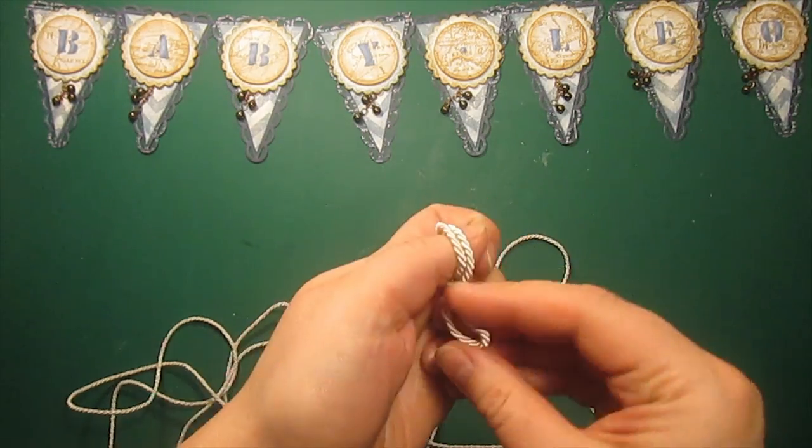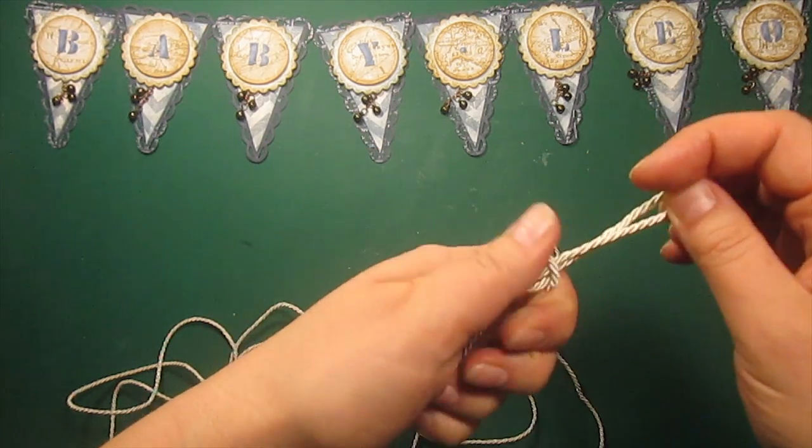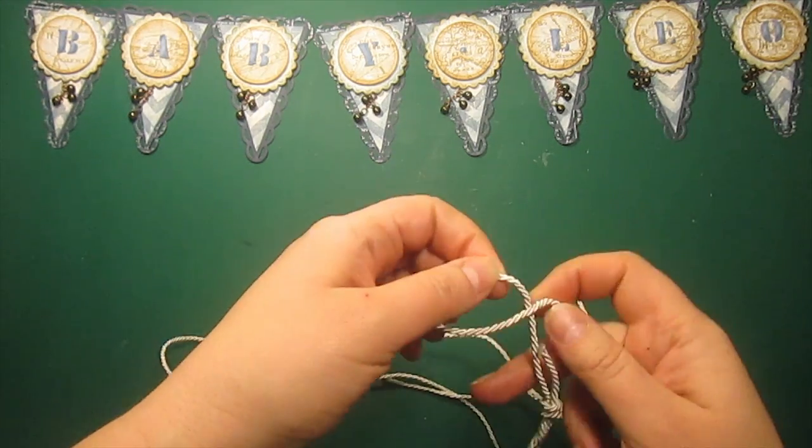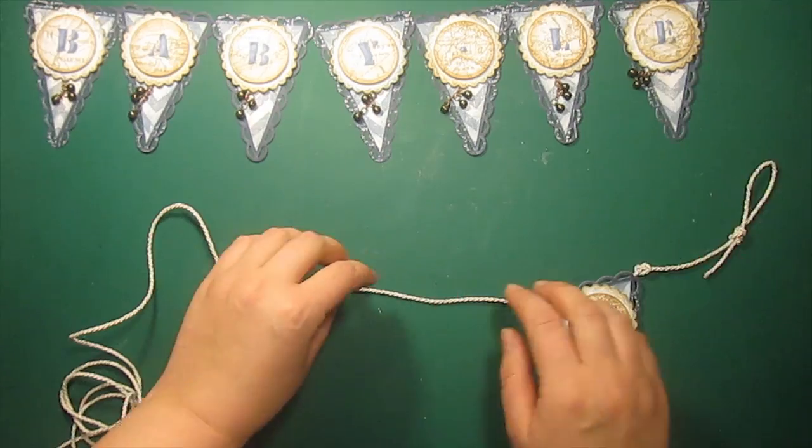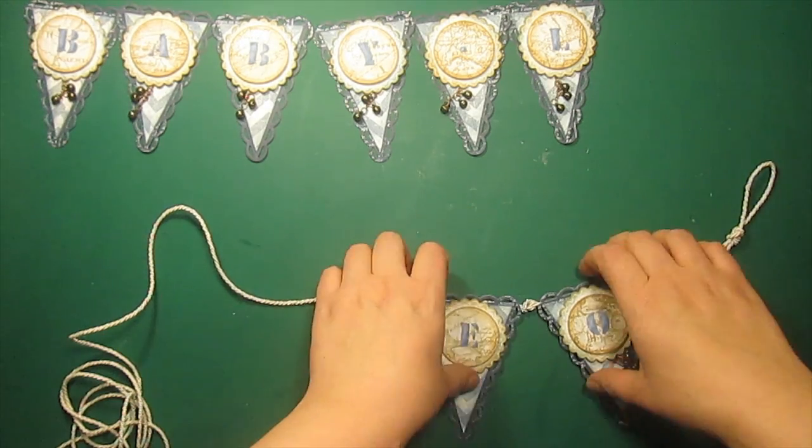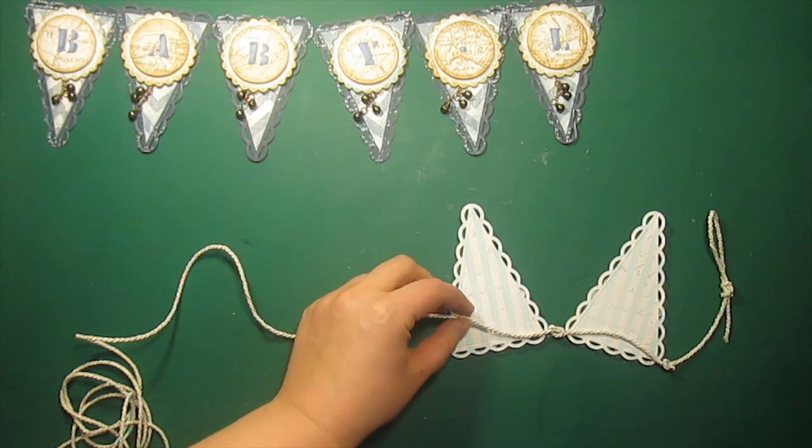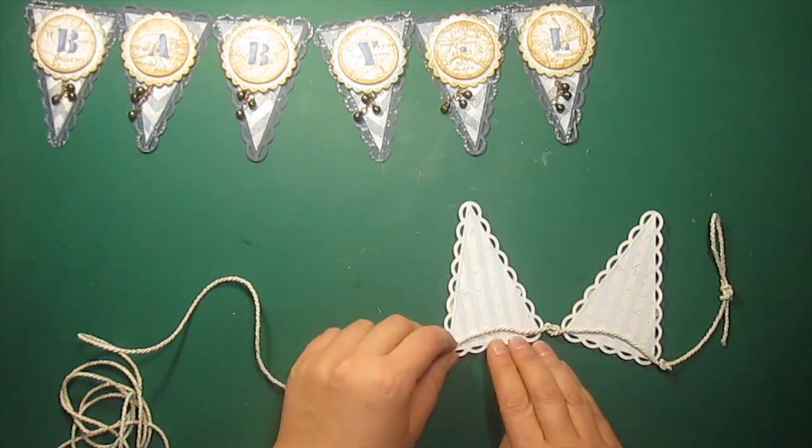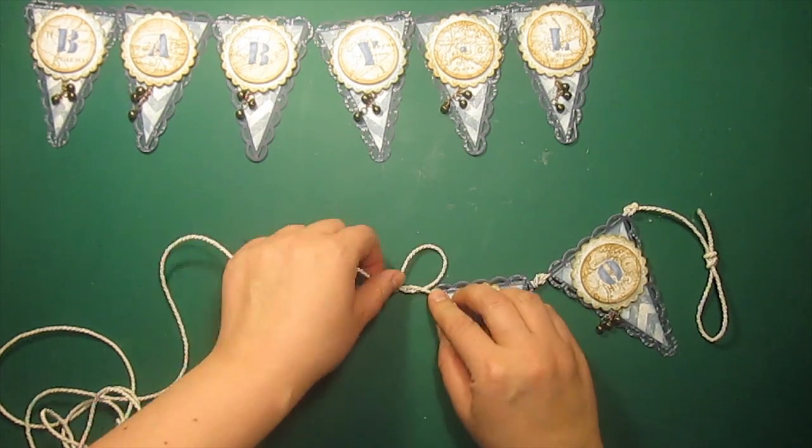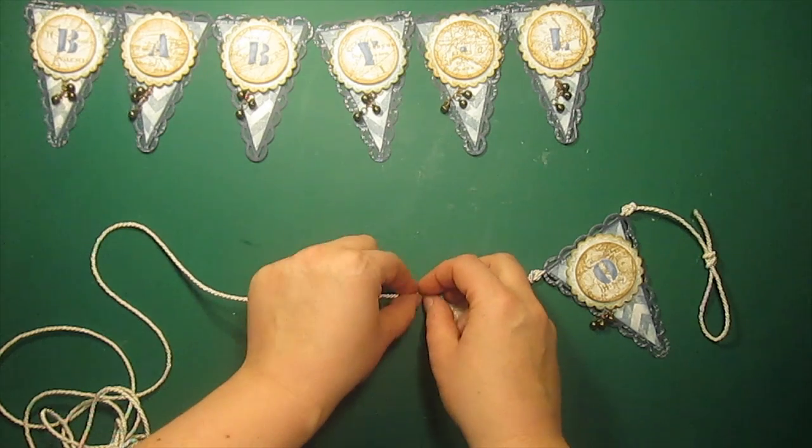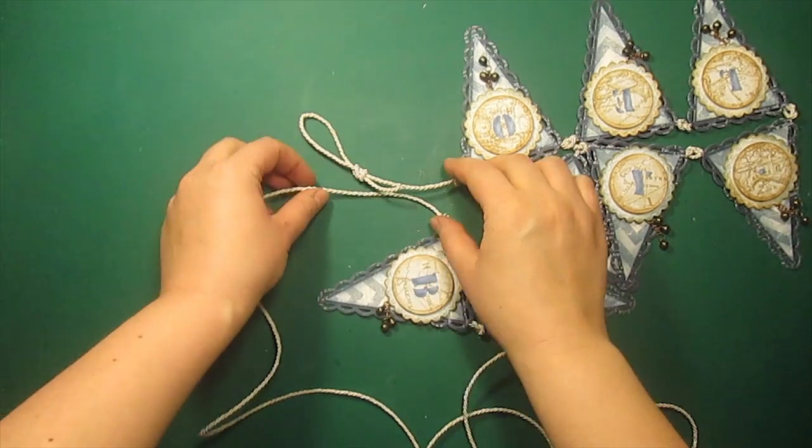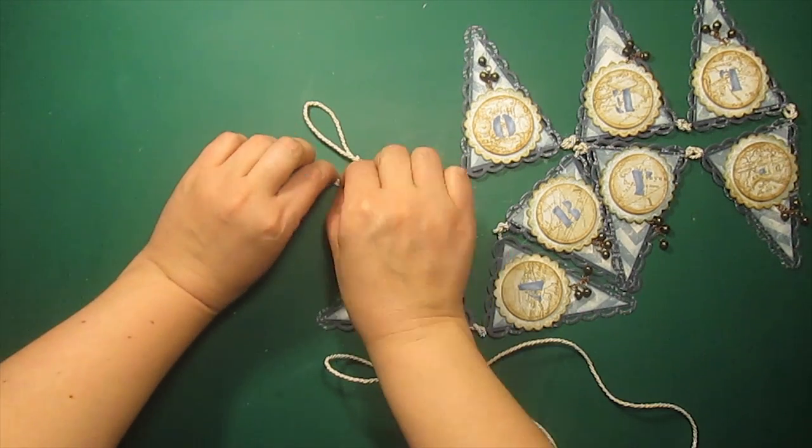I'll be using a thick twine to represent a rope. First I'm making a loop to hang the banners and then a simple knot. To attach banners to the rope I'm using the hot glue. At the end I'm making another loop of the same size.